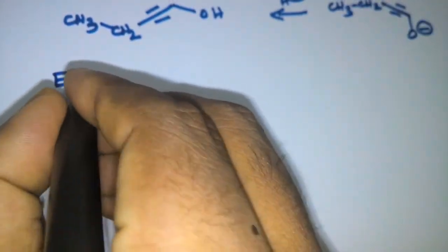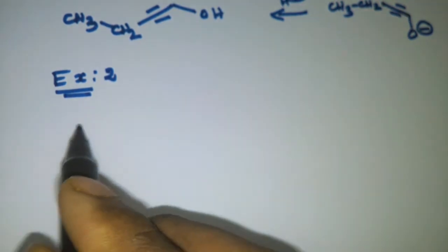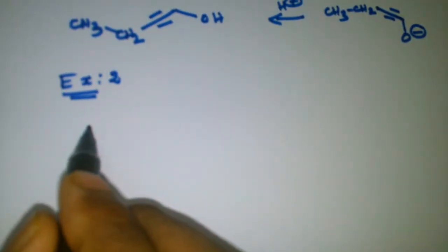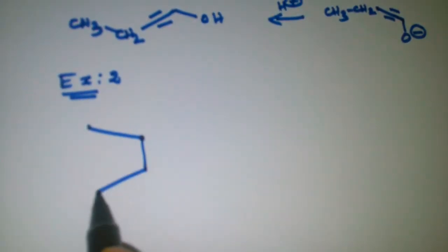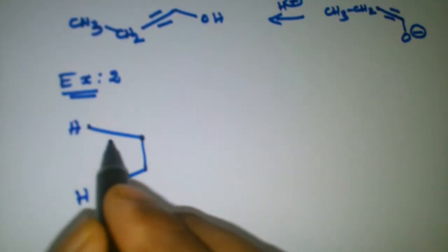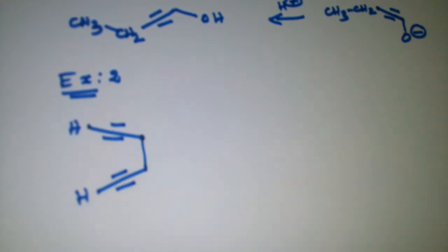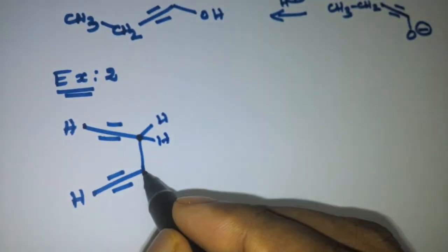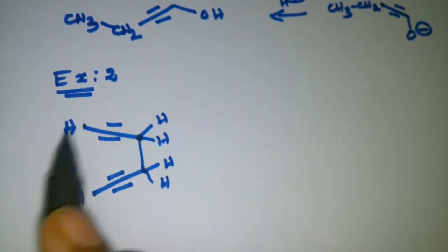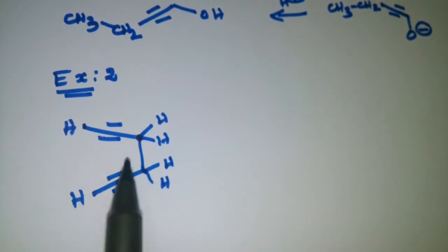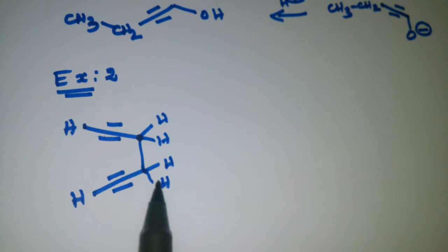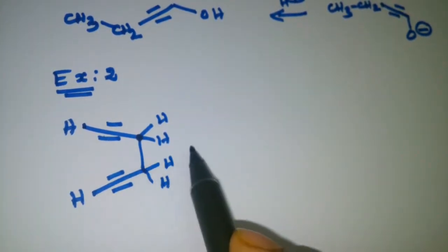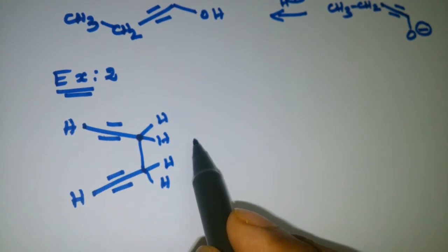Next, Example 2. In this compound we can take 3 equivalents of butyllithium, and we will get 3 anions.